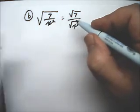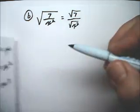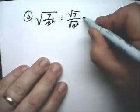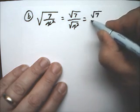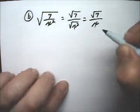And like we said in previous examples, the square root of x squared is equal to x. So, this simplifies to the square root of 7 over x.